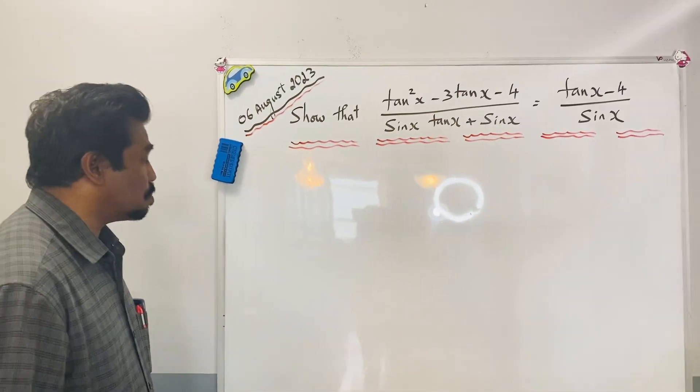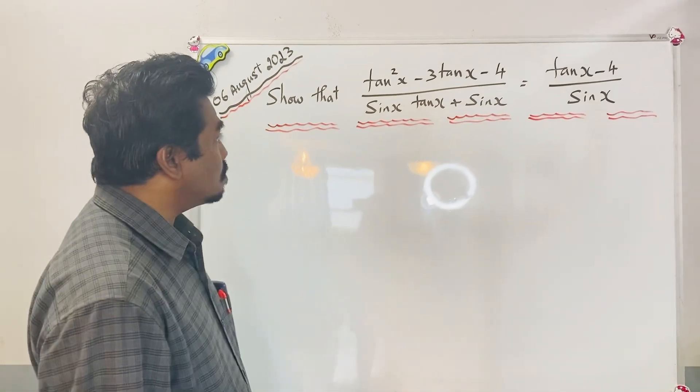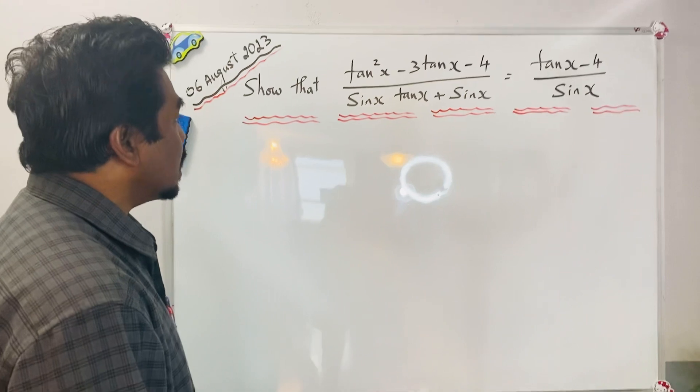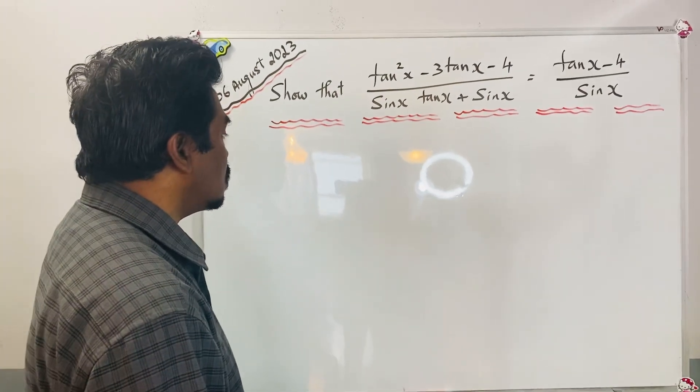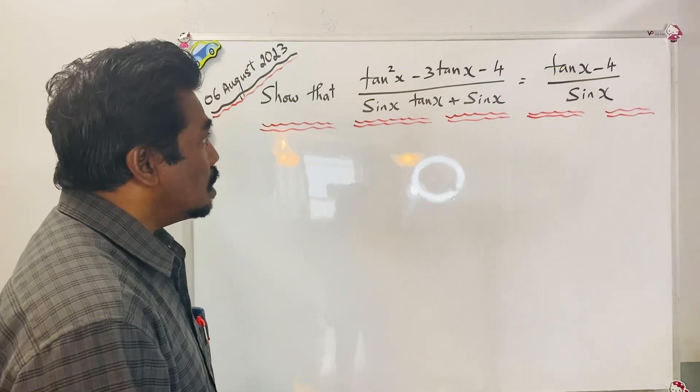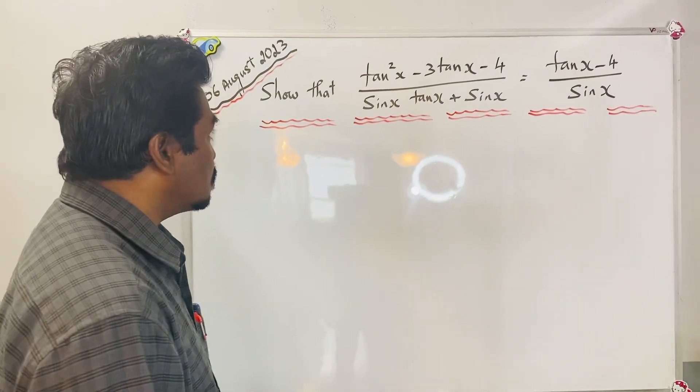Today we are going to prove a trigonometric identity. Our identity is tan²x - 3tanx - 4 over sinx tanx + sinx equal to tanx - 4 over sinx.